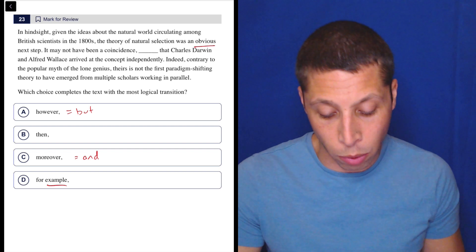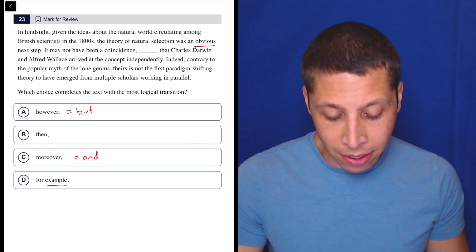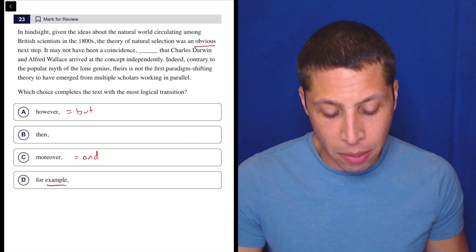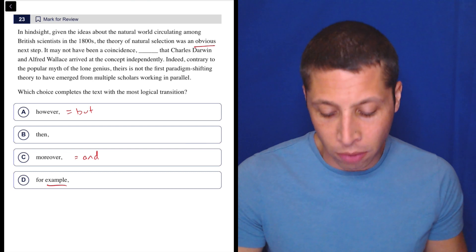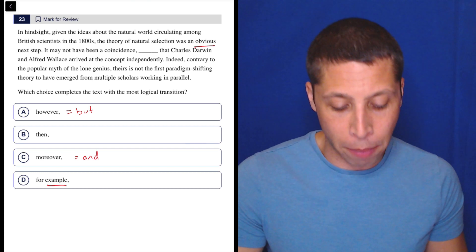Okay, so something's obvious, strong words. It may not have been a coincidence that Charles Darwin and Alfred Wallace arrived at the concept independently. Indeed, contrary to the popular myth of the lone genius, theirs is not the first paradigm-shifting theory to have emerged from multiple scholars working in parallel.